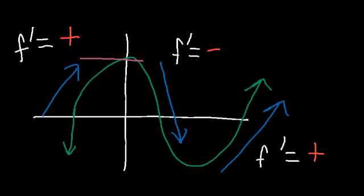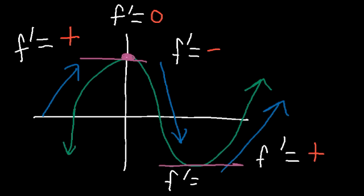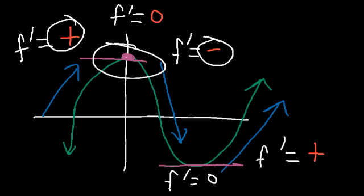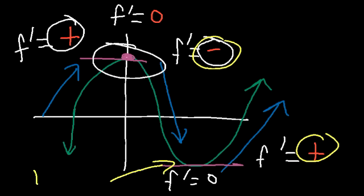At the local maximum, the first derivative is zero because the tangent line is horizontal and the slope is zero. And at the local minimum value, the first derivative is also zero. Whenever the first derivative changes from a positive value to a negative value, you have a local maximum. And whenever it changes from a negative value to a positive value, you have a local minimum. You can use that in the first derivative test to determine if you have a local max or local min.